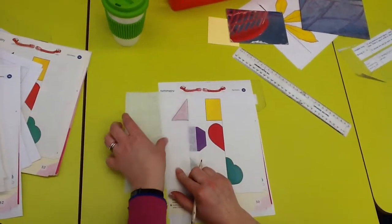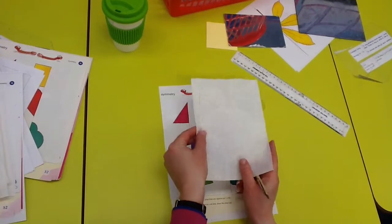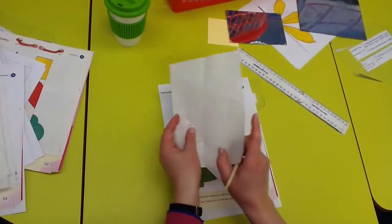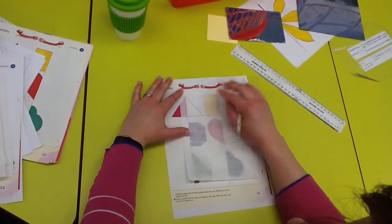OK, so when I've done that, I'm going to take the tracing paper off and flip it over. It's really important that you do that. So look what I did. I flipped it over and I'm now going to match the shape up, the mirror line up with the original shape.